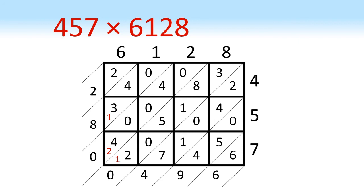So now reading off our numbers from the top left, we've got 2, 8, 0, 0, 4, 9, 6 which is 2,800,496.